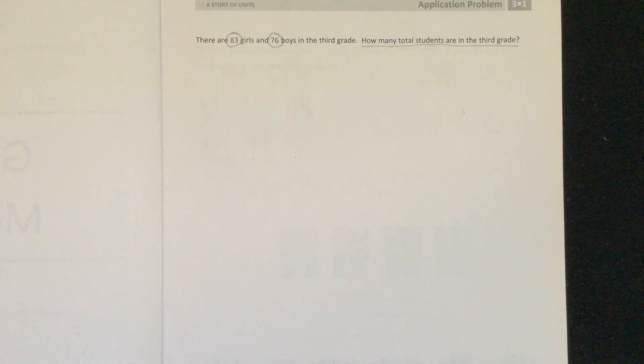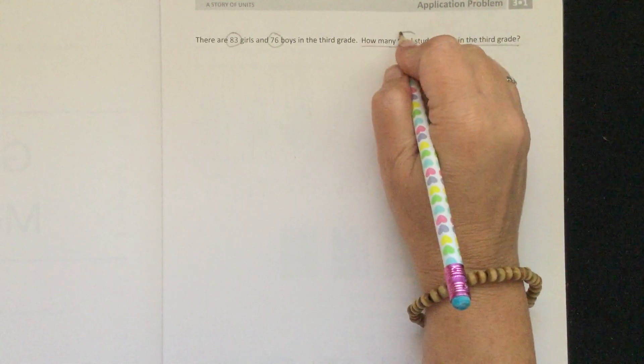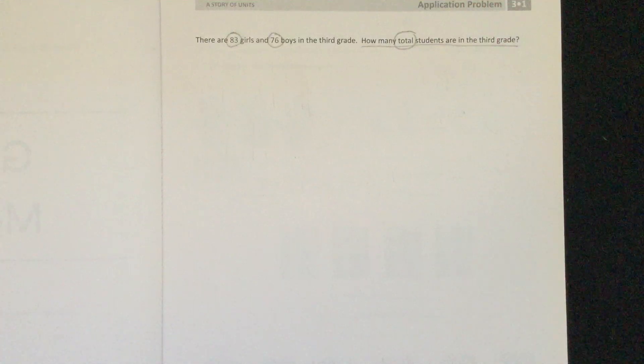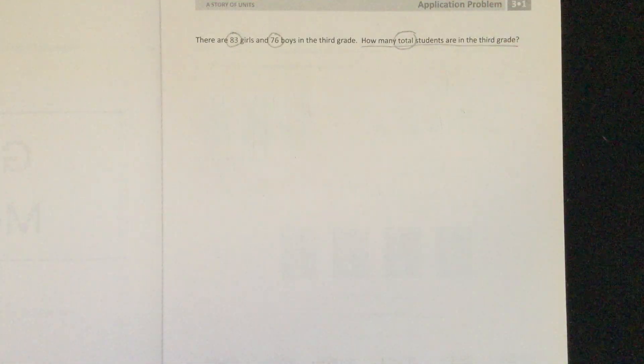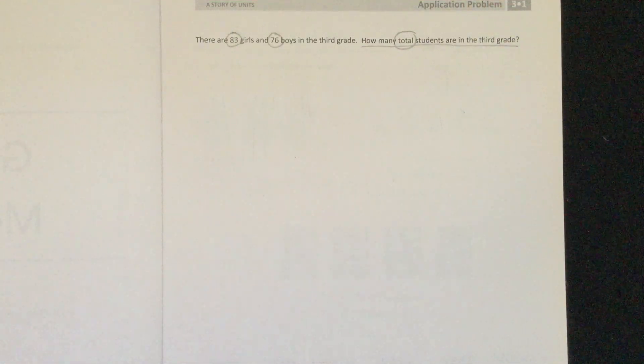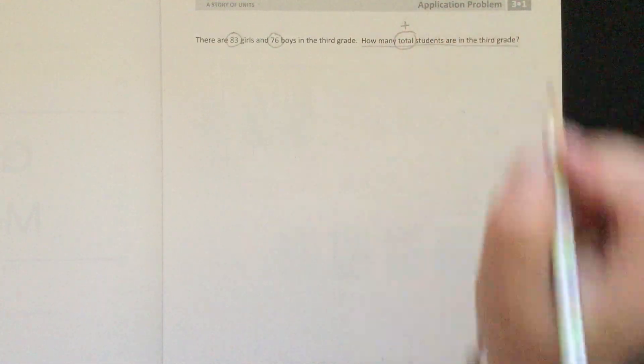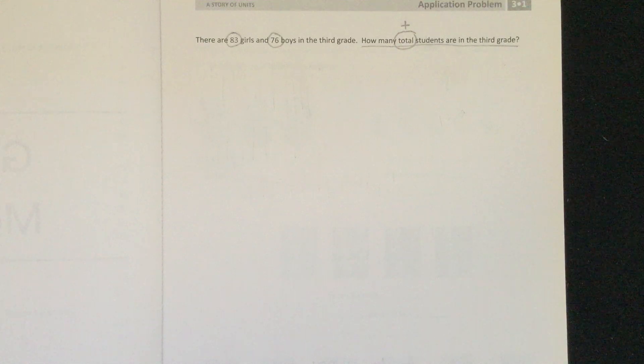We need to find a word that is going to tell us which operation we're going to use. Operation would be adding, subtracting, multiplying, or dividing. Here I see the word total, and total means you're going to have all of it. You have to put it all together, so we're going to add. Total tells us to add.